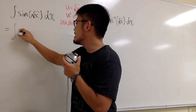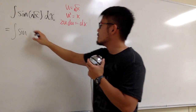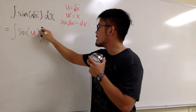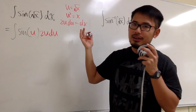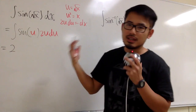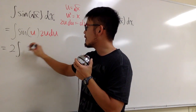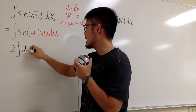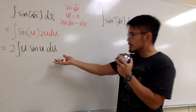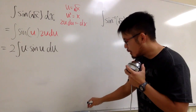We will have the integral, and then this is the sine — the square root of x inside becomes u. So we have sine of u. And the dx is 2u du. We just have to clean this up a little bit. We can put the 2 in the front of the integral, because that's just a constant multiple. And then we have the integral of u times sine u du.